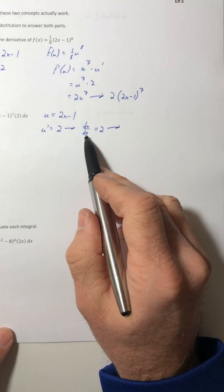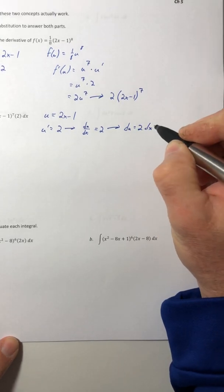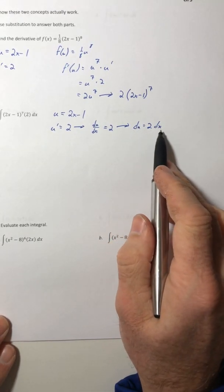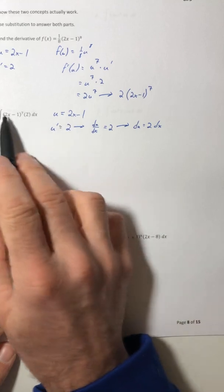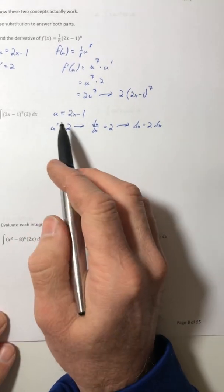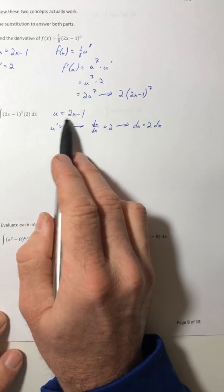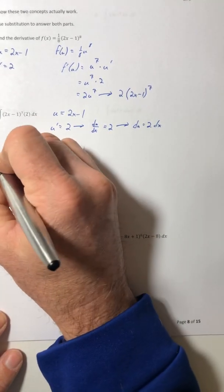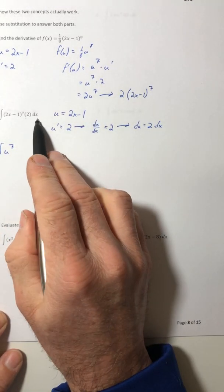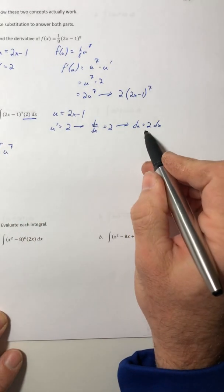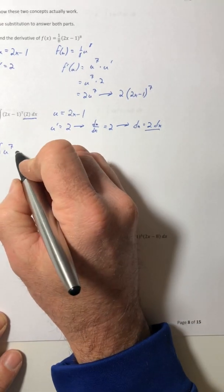I'm going to get the du by itself. So this dx, I'm going to multiply it over to the right. So I have du is equal to 2 dx. So what you're going to do is now you're going to get your integrand. You're going to switch it all out in terms of u. And you have to switch all of it out that applies. So the 2x minus 1 becomes u. The 2 dx, you have 2 dx right here. What does it equal? It equals du. So that 2 dx becomes du.